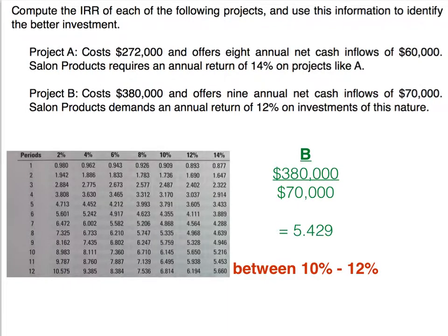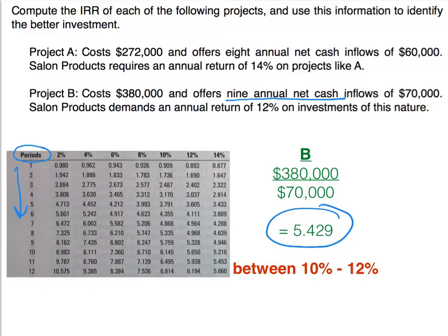When you find the annuity factor for Project B, you should have found 5.429. Project B has nine annual net cash inflows, so we go to our periods column, scroll down to row nine, then scroll right to find 5.429. We don't find that exact number, but it lies between 5.759 and 5.328. So we can approximate that this investment will bring in between 10 and 12%, but again, using this method we can't figure out the exact amount.